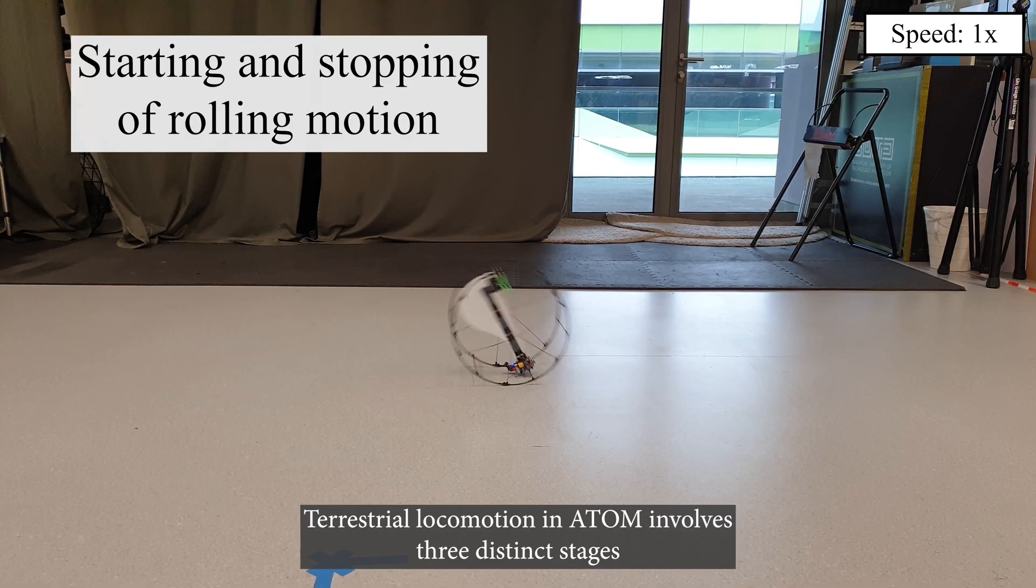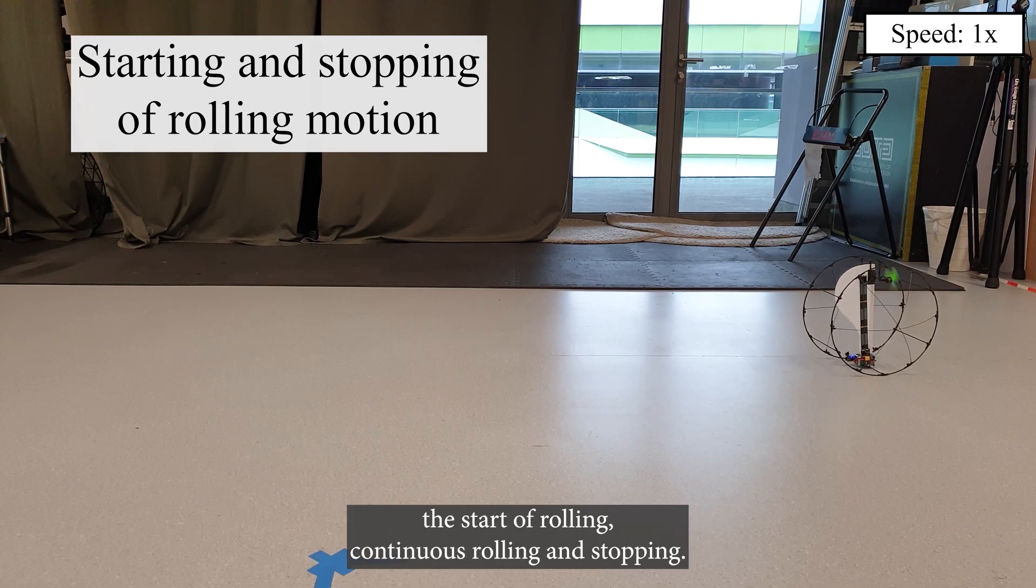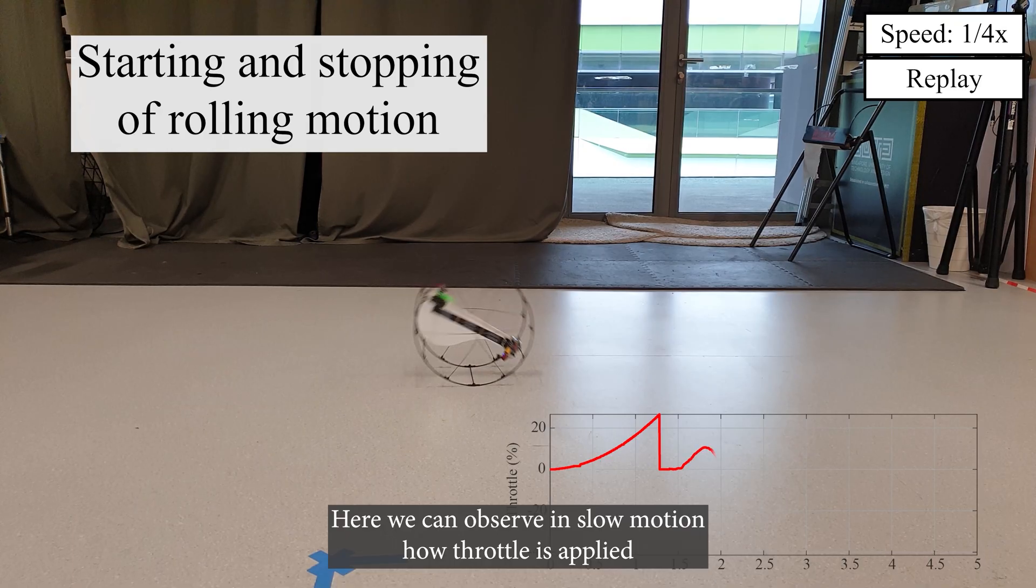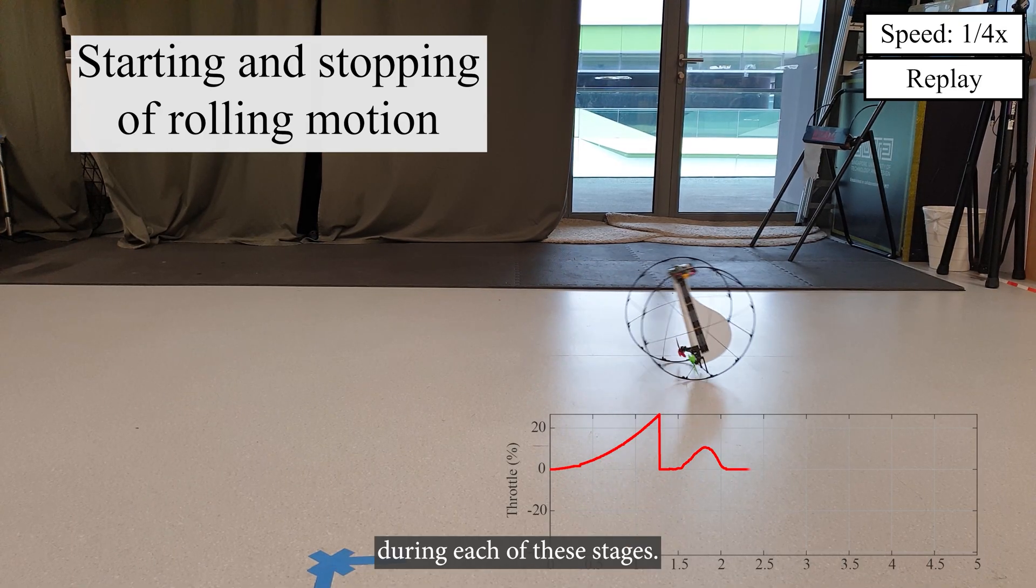Terrestrial locomotion in Adam involves three distinct stages: the start of rolling, continuous rolling, and stopping. Here we can observe in slow motion how throttle is applied during each of these stages.